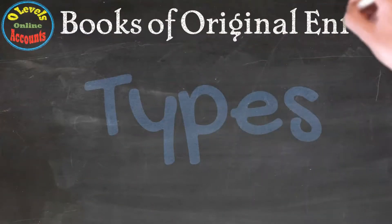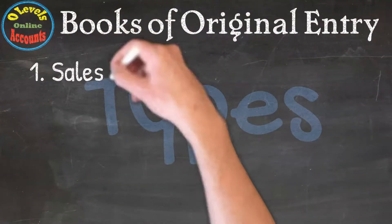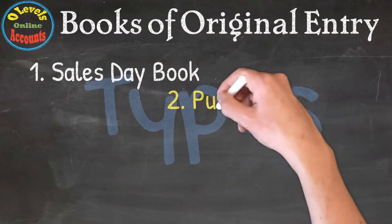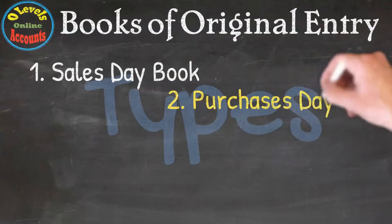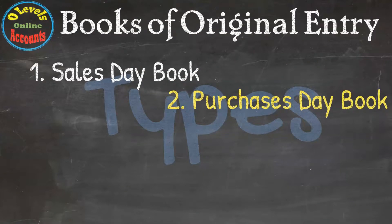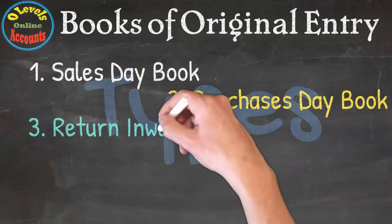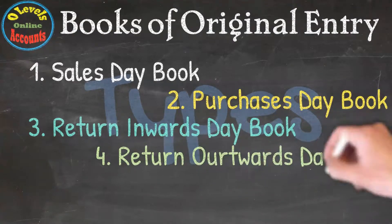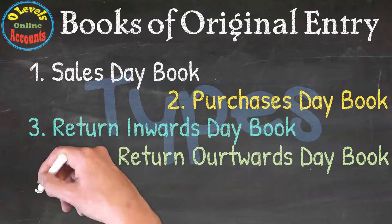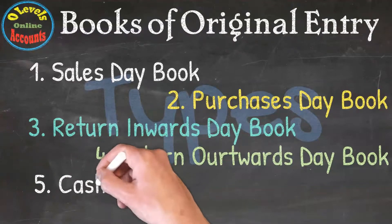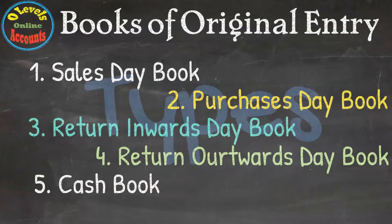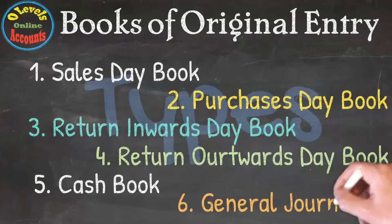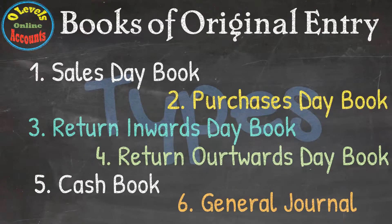There are six types of Books of Original Entry. Number one is Sales Day Book. Number two is Purchase Day Book. Number three is Returns Inwards Day Book. Number four is Returns Outwards Day Book. Number five is Cash Book. And finally, the General Journal. We will discuss each one in upcoming videos.